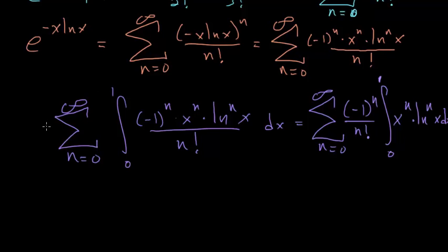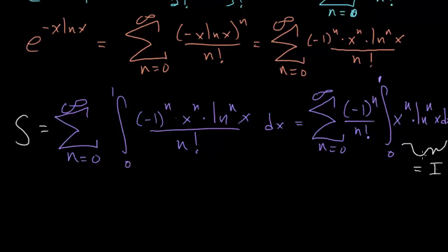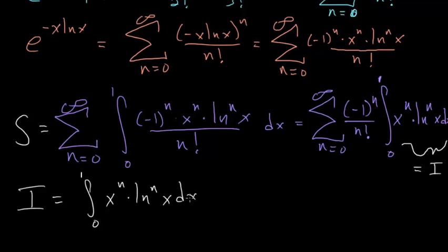Let's call this entire expression equal to S for sophomore's dream. From here we need to evaluate this integral, which we'll call I. To solve I, we'll have to use integration by parts essentially n times, so that we can get rid of this natural log function.